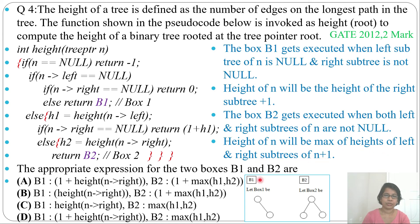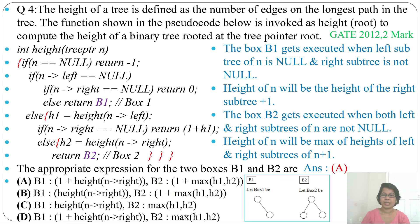Box B2 gets executed when both left and right subtrees are not null. The height of n will be the maximum of the left and right subtree heights plus one. So B2 will be one plus maximum of h1 and h2, where h1 is height of n.left and h2 is height of n.right. Therefore, the answer is option A. Thank you.